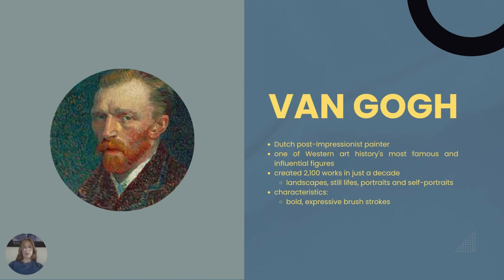I have a lecture on the life and death of Vincent van Gogh, which I'll add in the cards and description, but let me give you a brief overview of the post-impressionist master. Vincent van Gogh was a Dutch post-impressionist artist who, after his tragic death, became one of the most famous and influential figures of Western art history. In just a decade, van Gogh created 2,100 artworks that included landscapes, still lifes, portraits, and self-portraits. His works are characterised by bold, expressive brushstrokes that heavily contributed to the development of modern art throughout the 20th century.